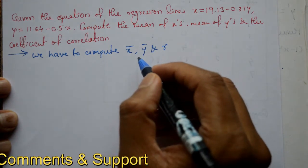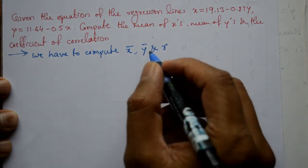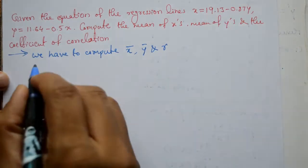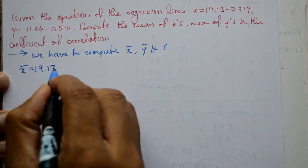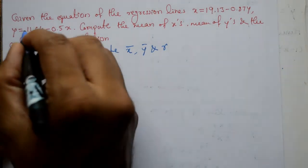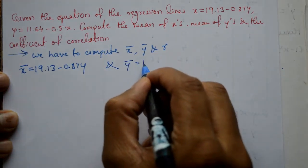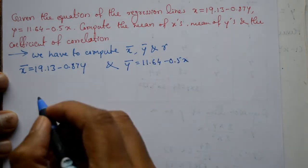Now, the regression lines passes through x bar and y bar. So we take x bar is equal to 19.13 minus 0.87 into y and y bar equal to 11.64 minus 0.5 into x.